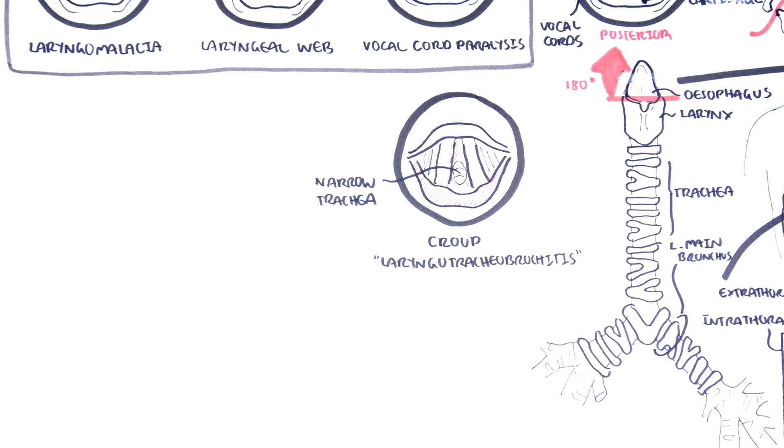Croup is slightly more common in males, and is usually preceded by an upper respiratory tract infection, which evolves into a barking cough, inspiratory stridor, and hoarseness due to inflammation of the vocal cords.